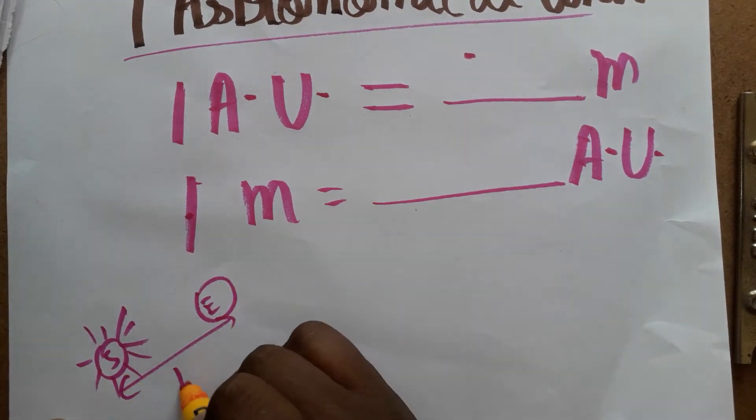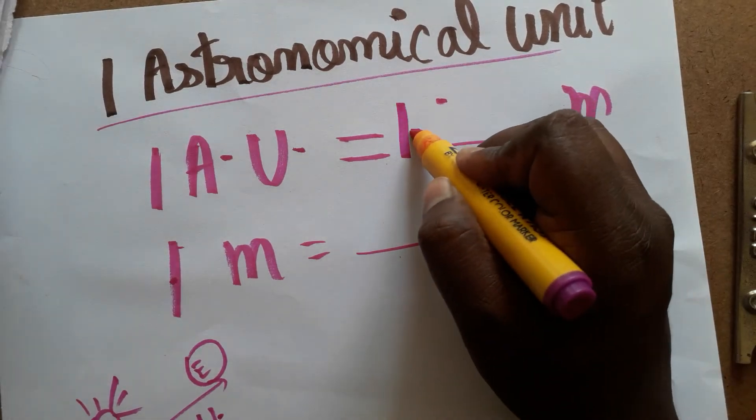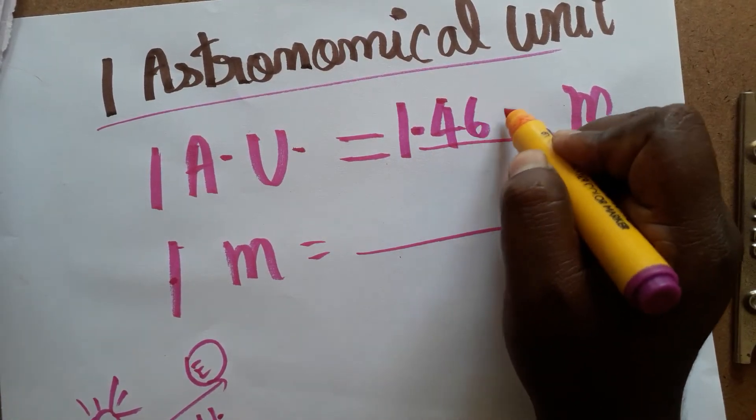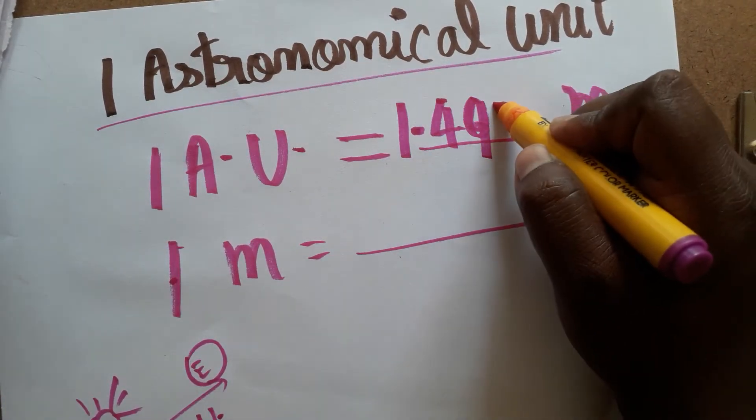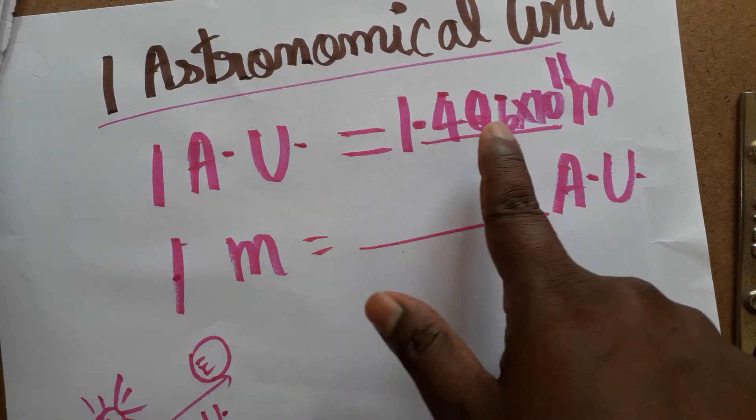So one AU is dash meter. That is the distance between the sun and the earth is 1.496 into 10 power 11. Now one astronomical unit is equal to this many meter.